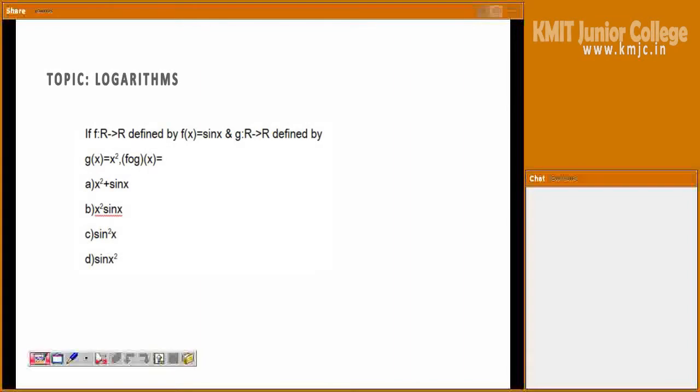Hi everyone, now we'll see an M-set problem. If f from R to R is defined by f(x) equals sin x, and g from R to R is defined by g(x) equals x squared,